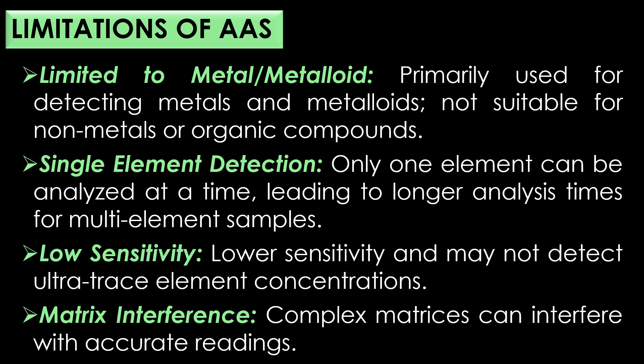Limitations of atomic absorption spectroscopy: Limited to metals or metalloids — AAS is primarily used for detecting metals and metalloids and is not suitable for non-metals or organic compounds. Single element detection: only one element can be analyzed at a time, leading to longer analysis times for multi-element samples. Low sensitivity: AAS has lower sensitivity and may not detect ultra-trace element concentrations.